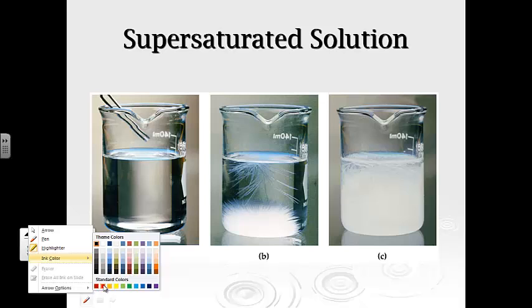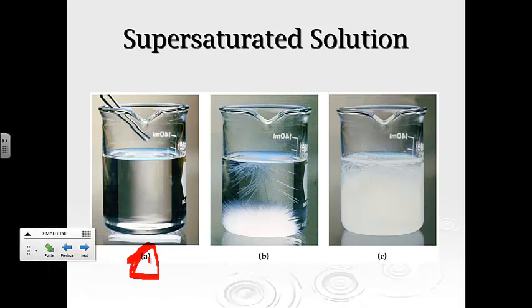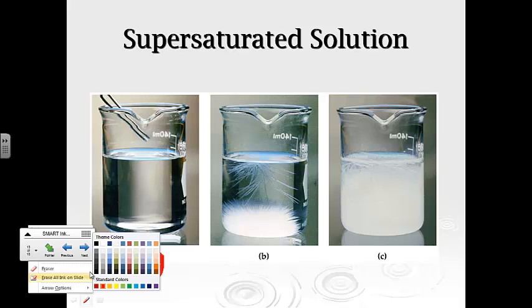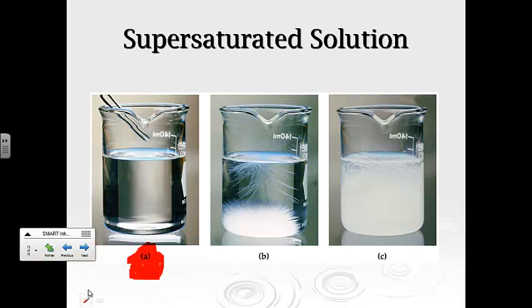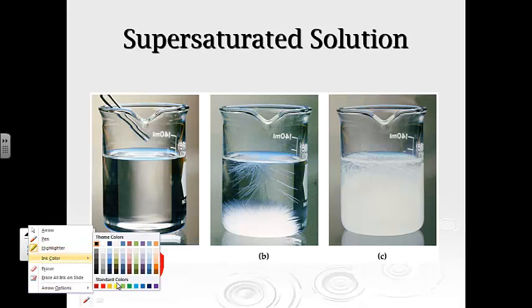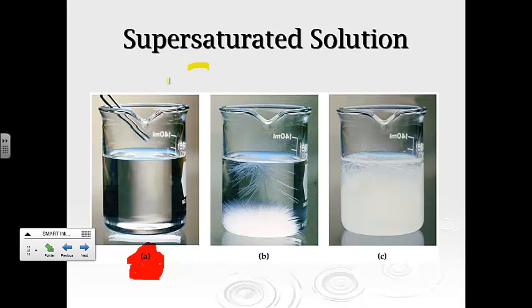All right, supersaturated solutions. So here you go. We heat this up, so under here, we'd have a whole bunch of fire, maybe a Bunsen burner or something. We're going to heat it up. As soon as we heat it up, we add in a bunch of stuff, a lot of material, a whole bunch of sugar, because that's what we refer to with rock candy.